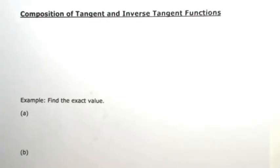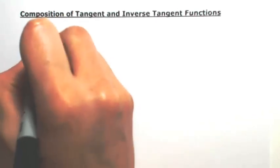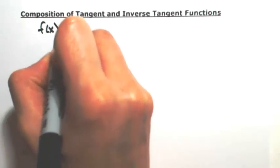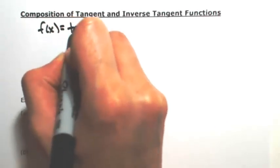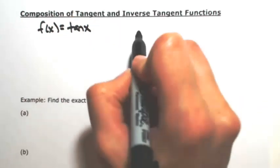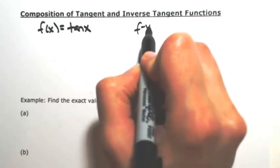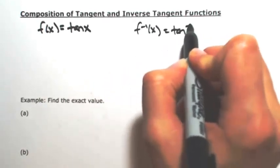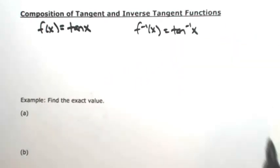Suppose we want to compose the tangent with the inverse tangent function. To do this we need to figure out the domain and range to see how they compose. So first of all let me call the tangent function f, so f of x equals tangent of x. Then the inverse will be the inverse tangent of x.